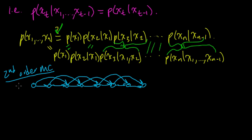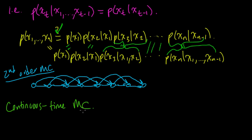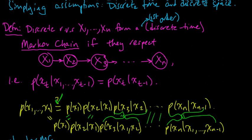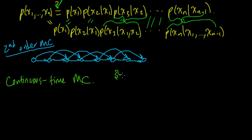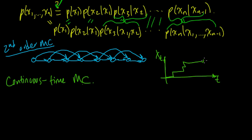Another generalization is continuous time Markov chains or Markov processes. A simple example is a Poisson process: the time axis is continuous, and at exponentially distributed intervals the value jumps, always taking integer values. That's a continuous time Markov chain.